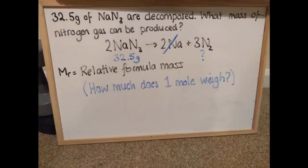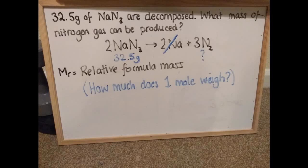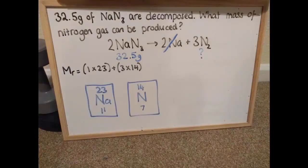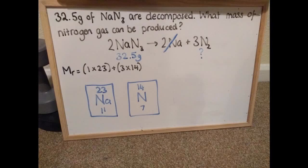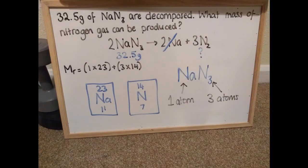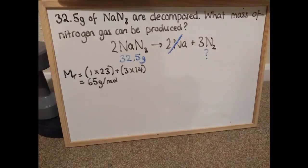Once I've crossed things out my first real step is to work out the relative formula masses. Remember a relative formula mass is the mass of one mole. So for now I'm just going to ignore the coefficients, these big numbers at the front. I use the periodic table to find the relative mass of each element. I multiply that relative mass by the number of atoms of each type. So here in sodium azide there's one sodium with a mass of 23 and three nitrogen atoms with a mass of 14 each. That gives me a total MR of 65 grams per mole.